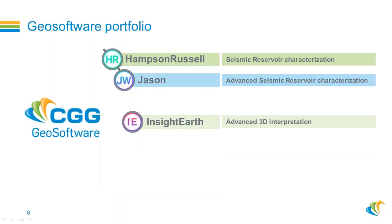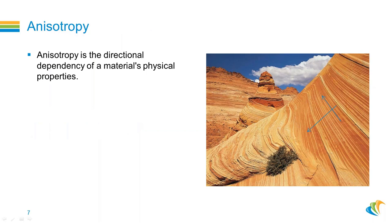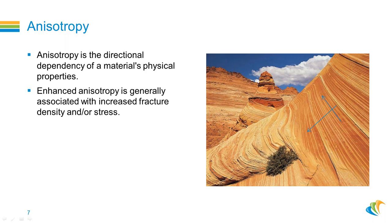Today I will talk about Hampson-Russell, Jason, and InsideEarth, and the tools within these applications to help us investigate anisotropy. Anisotropy is the directional dependency of a material's physical properties. The simple case is that we have layers of strata, and seismic velocity in one direction is different than in another direction, making anisotropy in the seismic velocity. These layers could be disturbed, and that disturbance can cause enhanced anisotropy associated with stress or fractures — so if we find this anisotropy, we can find the fracture zones.